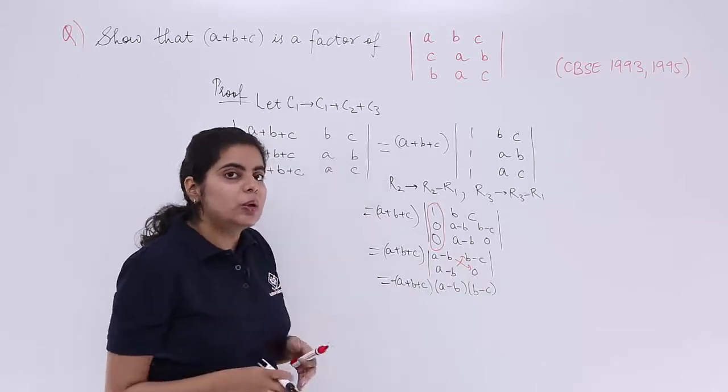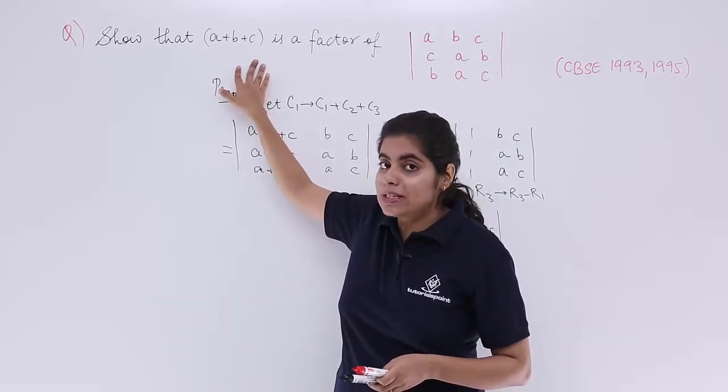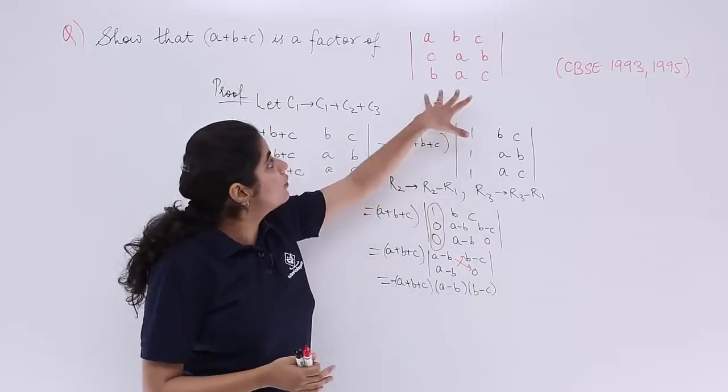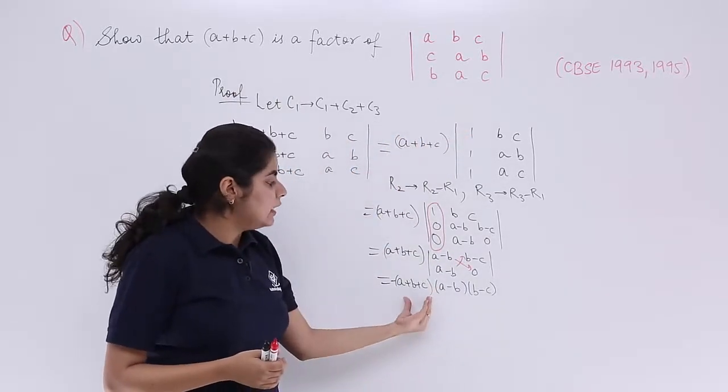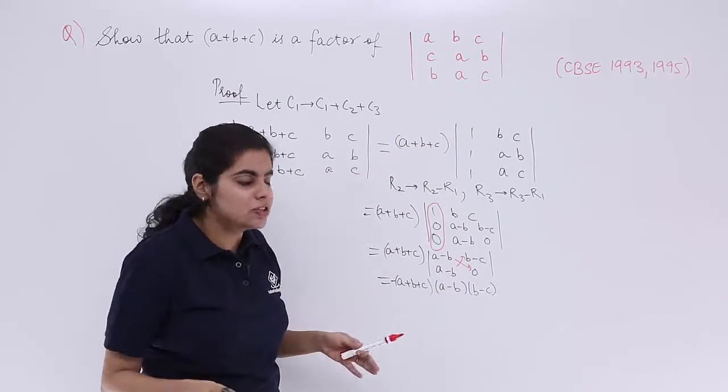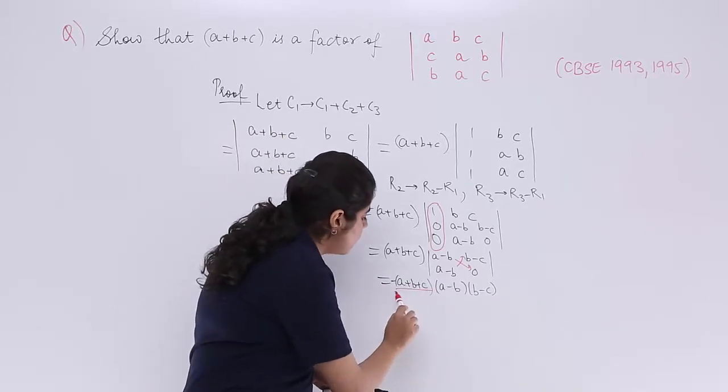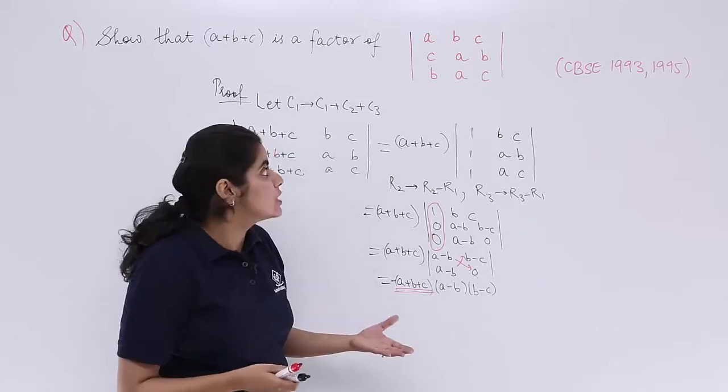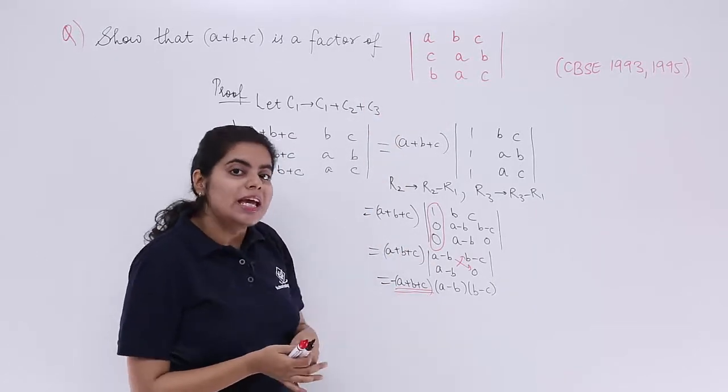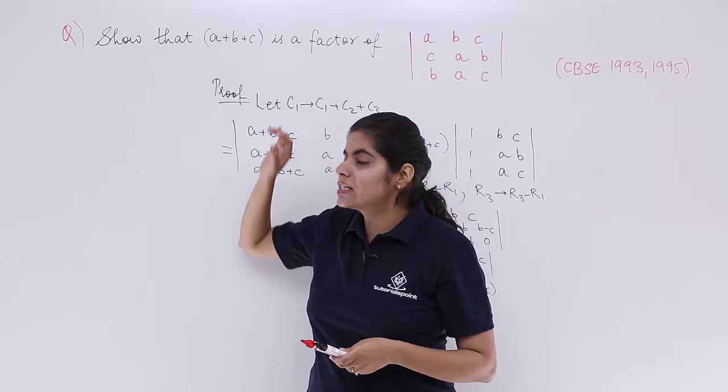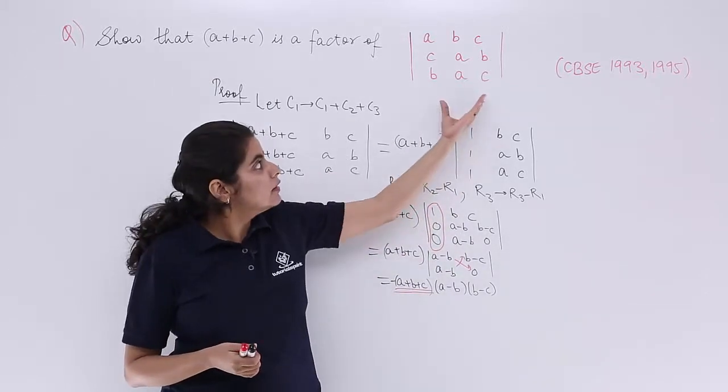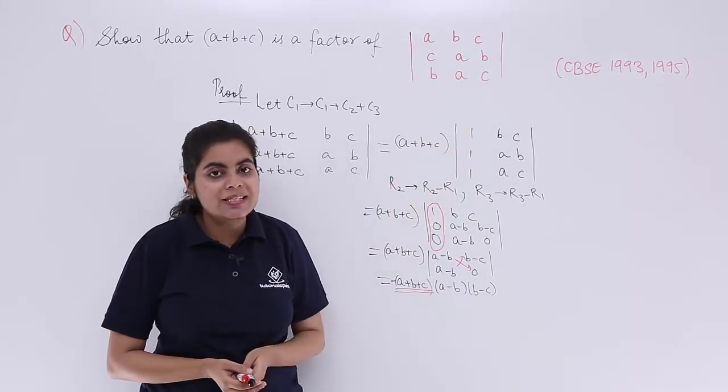Now let's read the question again. The question said that show that a plus b plus c is a factor of this determinant and you find in the end that yes, you have many things here, three product elements multiplied but you also have a plus b plus c and so we prove that yes, a plus b plus c is a factor of this given determinant wherein the determinant had a, b, c as its elements.